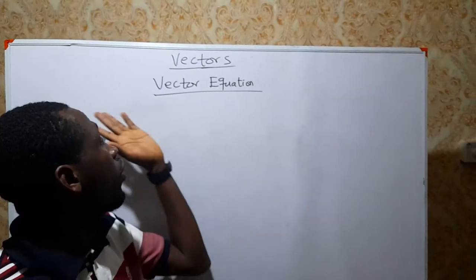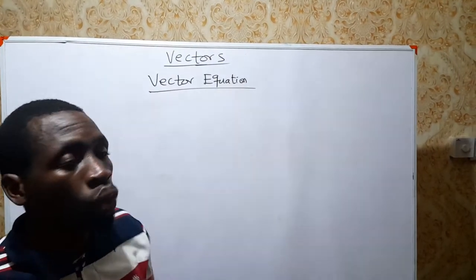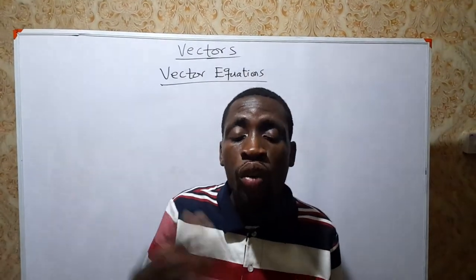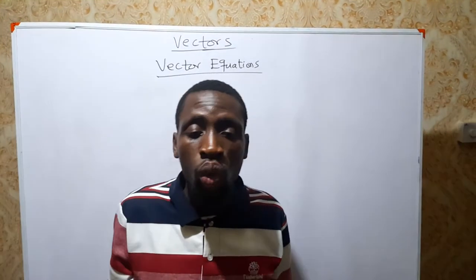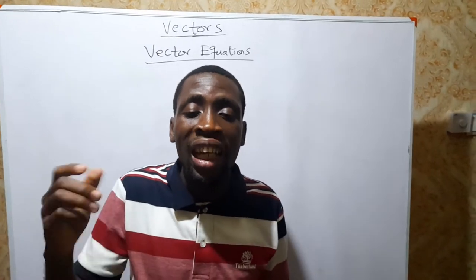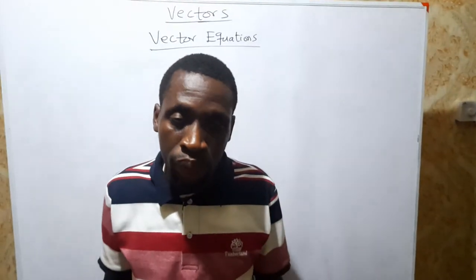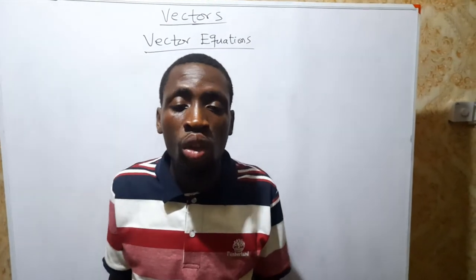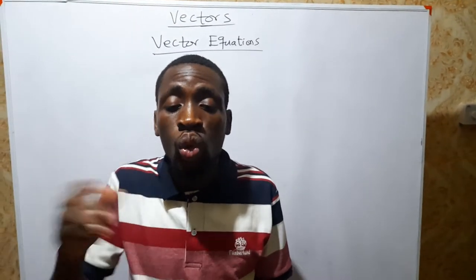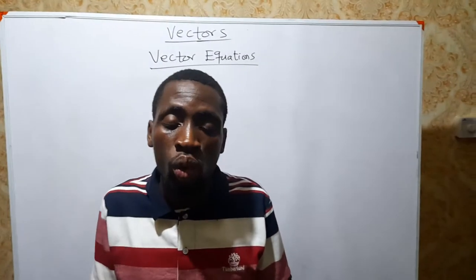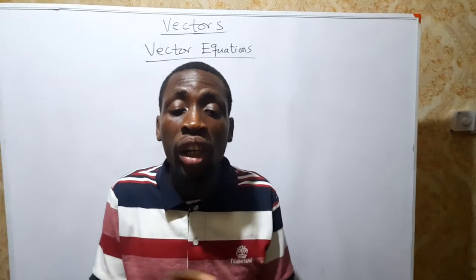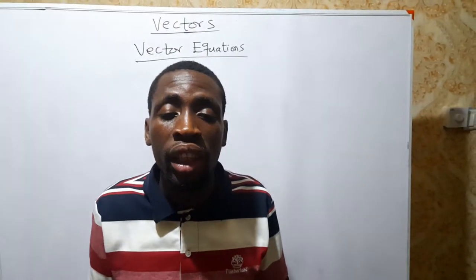Today our discussion on vectors will be finding vector equations. Before the video ends today, I will revise your knowledge on the general equation of a line. Then we will learn how to find a vector equation given the Cartesian equation of a line, and how to find a vector equation when two points are given. Then we will do the opposite — find a Cartesian equation when a vector equation is given. Please watch the video till the end.